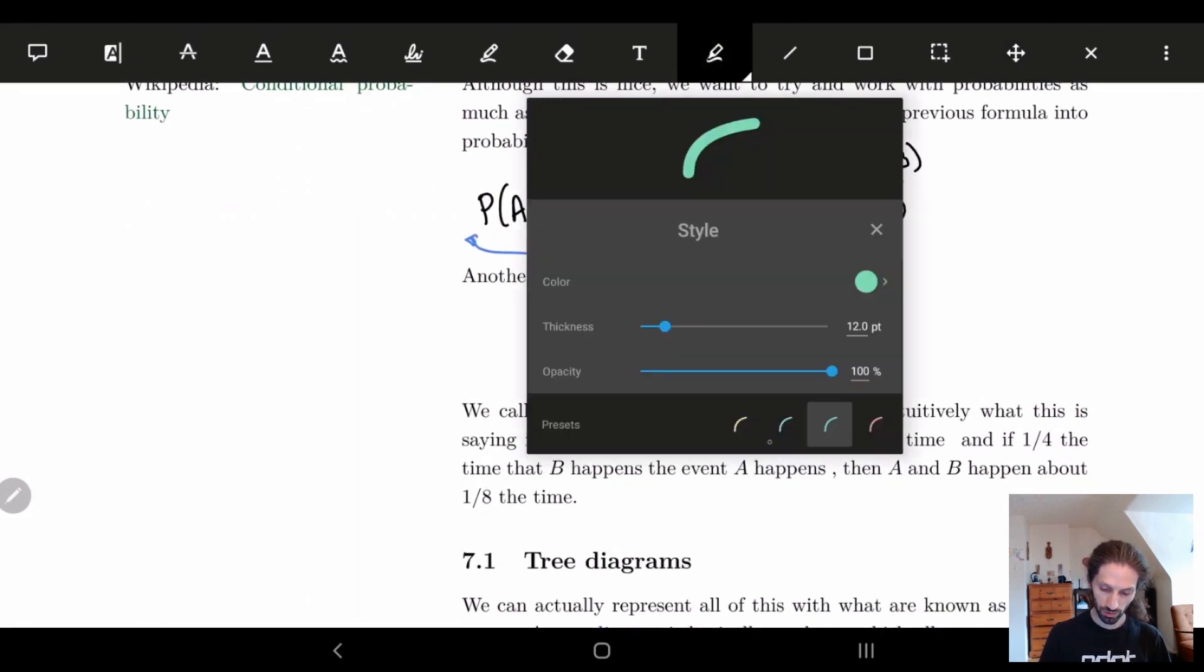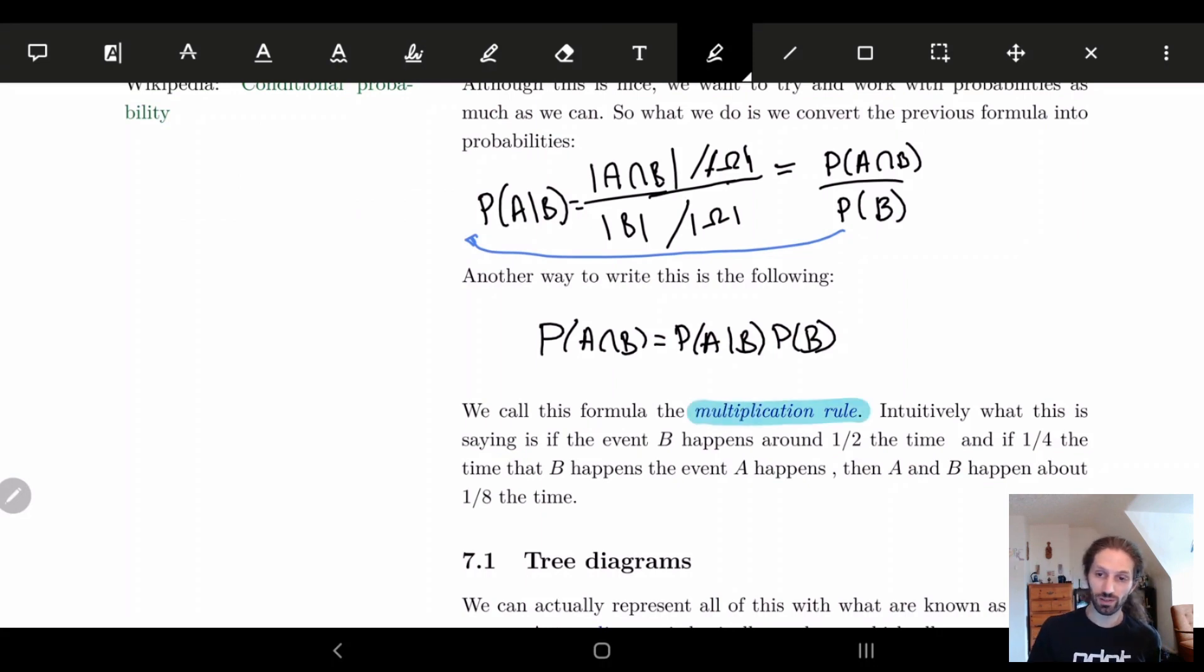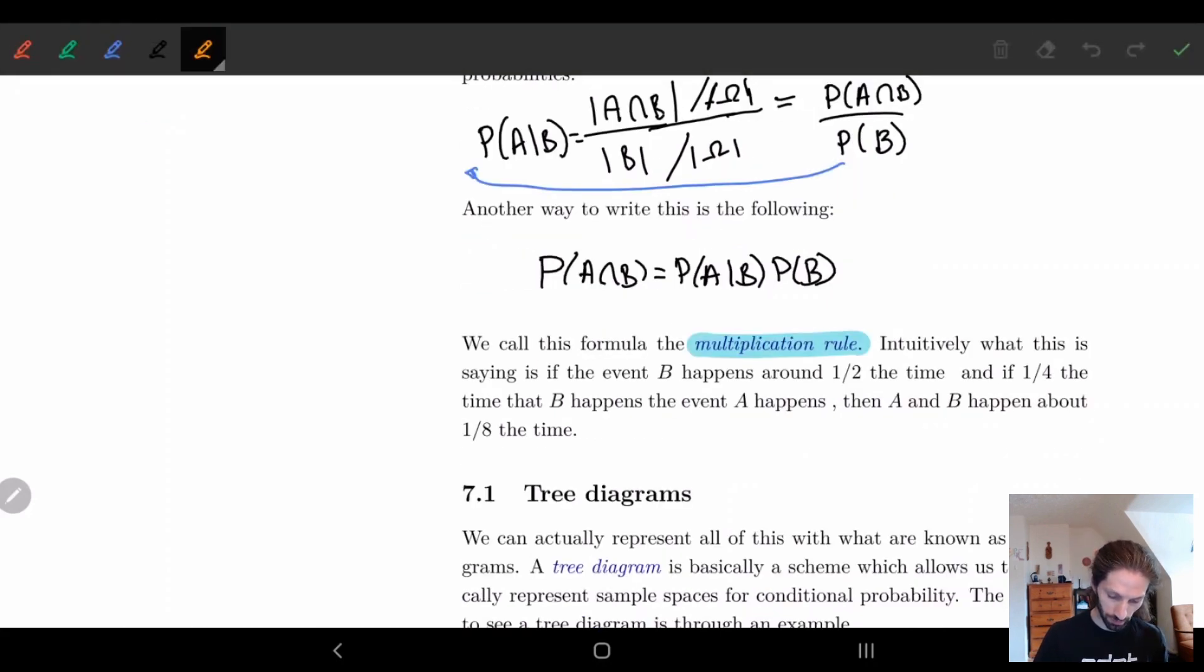And basically intuitively what this is saying is if the event B happens one half the time, so basically if probability of B is equal to 1/2, and if 1/4 of the time that B happens the event A happens, so if the probability of A given B is given by 1/4, then the probability that A happens is just going to be the multiplication of the two. So we get the probability of A and B is equal to 1/2 times 1/4. So it's 1/8. And this is basically where this is coming from.